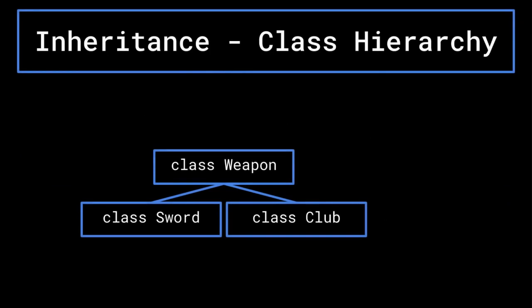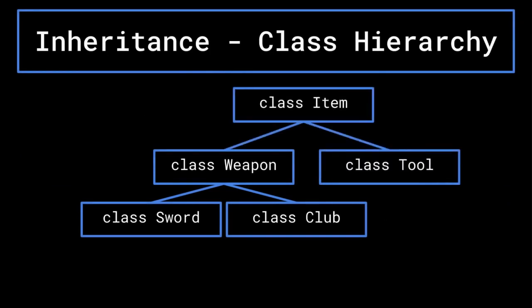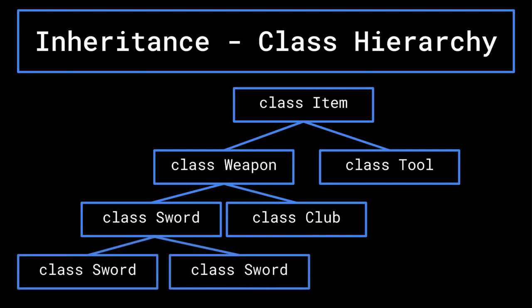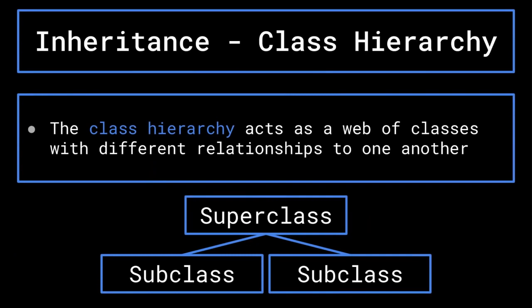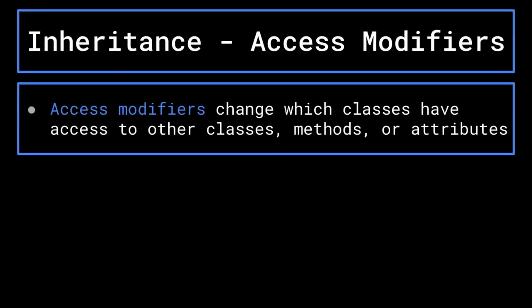Many of the attributes and methods associated with the weapon class would also be present in its subclasses. The class hierarchy does not tend to be so small, however, as in most cases there are many more layers than just one superclass and a couple of subclasses. The weapon class may be a subclass to a broader items class, which could contain many other subclasses with subclasses of their own. Additionally, you may include a wider variety of weapons than just swords and clubs, as well as multiple types of swords that would require different behaviors and thus their own subclasses.